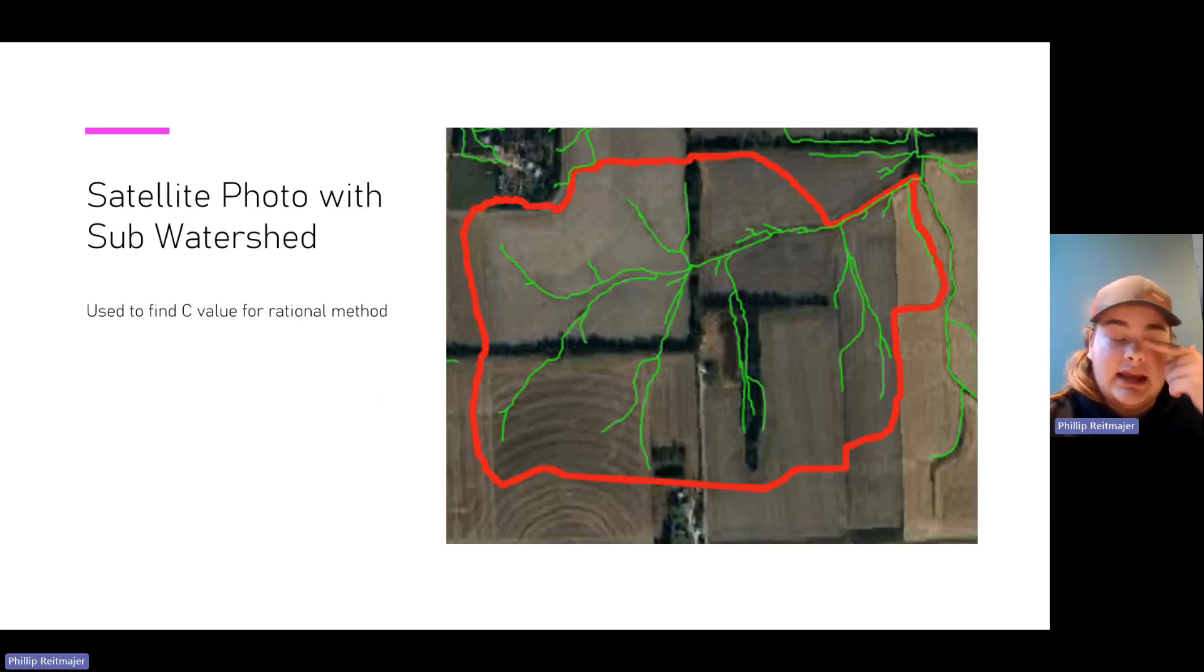With that rainfall intensity, I can then use the rational method, but first I have to find a C value. To do this, I put a satellite view underlay using quick map services in QGIS to find what was underneath my sub-watershed. Looking at the satellite photo, I deemed it to be cultivated land. And then with a slope of 2%, that would make it flat cultivated land, meaning that the C value was 0.36.